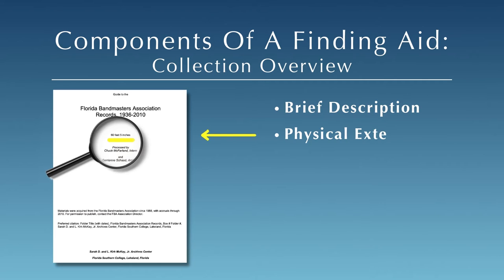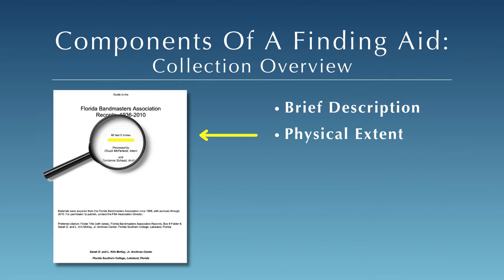Also note the physical size of the collection. Different institutions may use different units for measuring the extent of a collection — for example, linear feet, cubic feet, feet, boxes, or items. This number will give you an idea of how large or how small the collection is and how many boxes it contains. This is helpful when considering how much time it will take to complete your research.